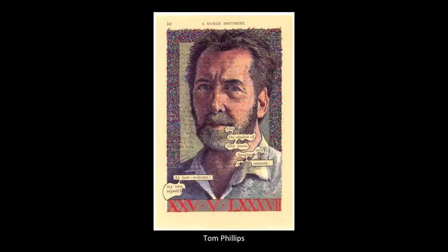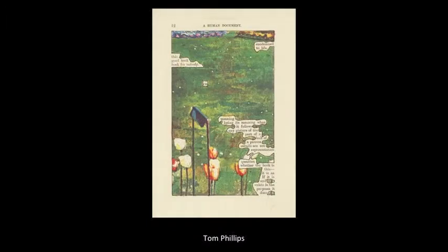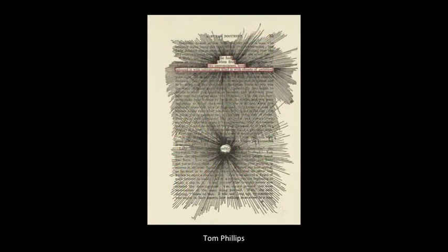For his best-known work, The Humument — a treatment of a Victorian novel — Tom Phillips randomly purchased a Victorian novel from a bookshop and began drawing on the pages. Leaving certain words exposed creates a kind of spontaneous, found story. This found text is reminiscent of some of the work of Tristan Tzara and the Surrealists from the mid-20th century. Phillips creates his own story of lost love and the search for art.